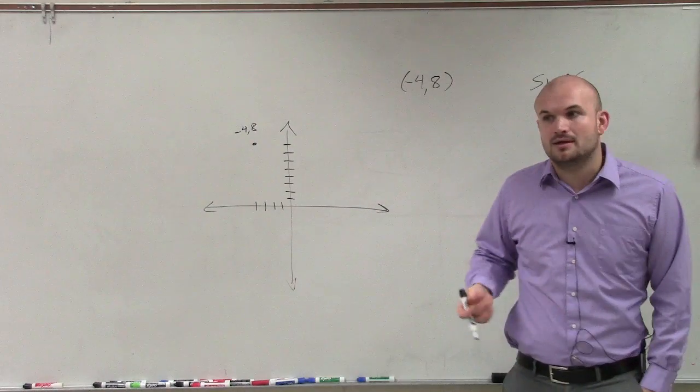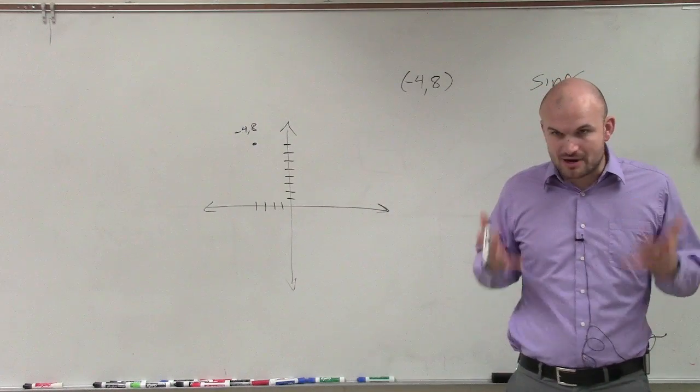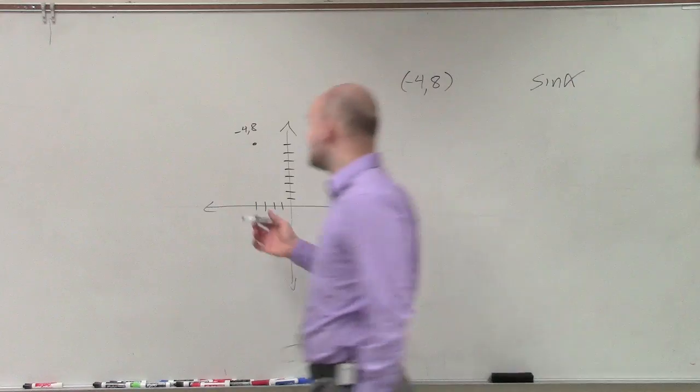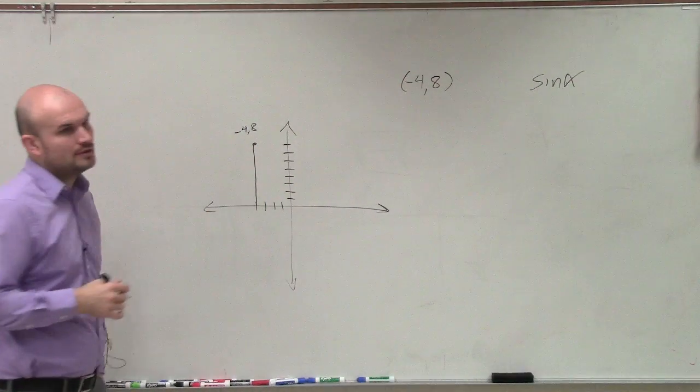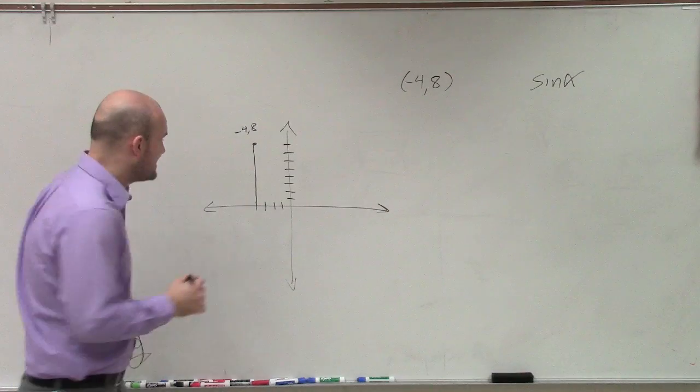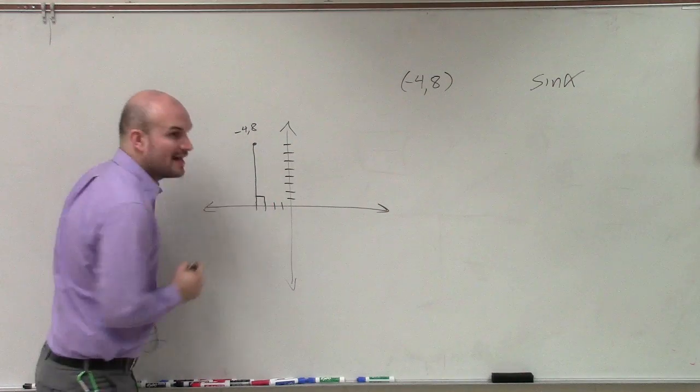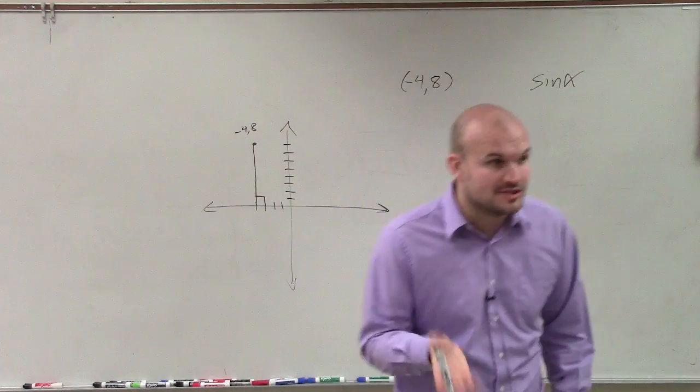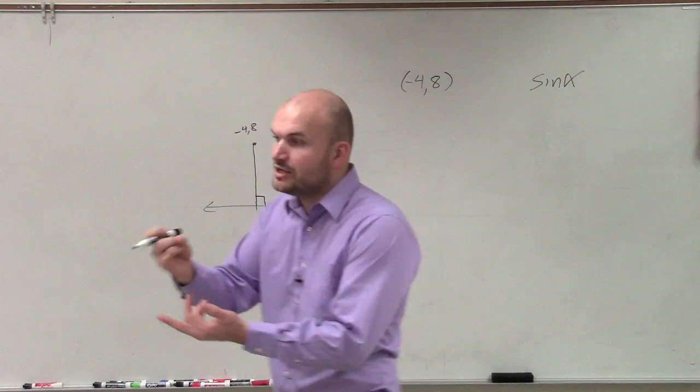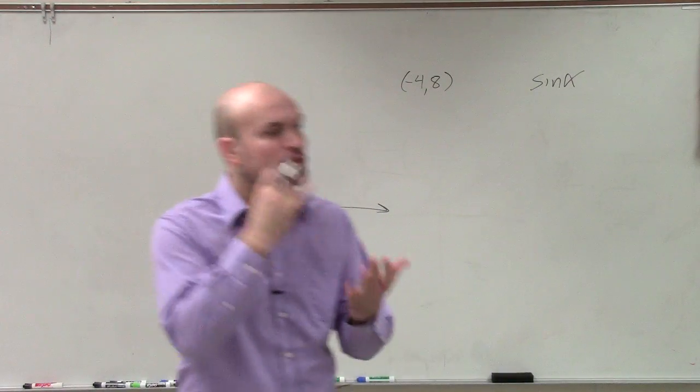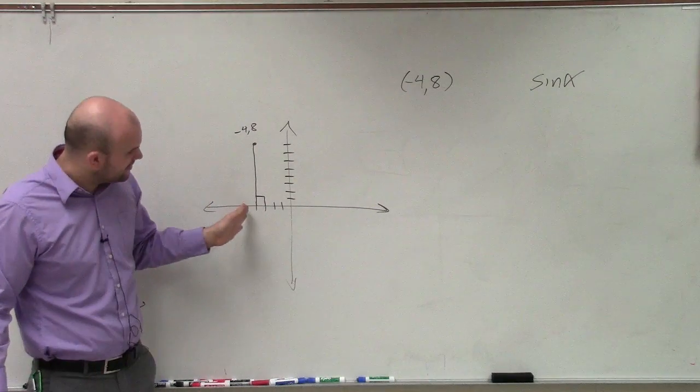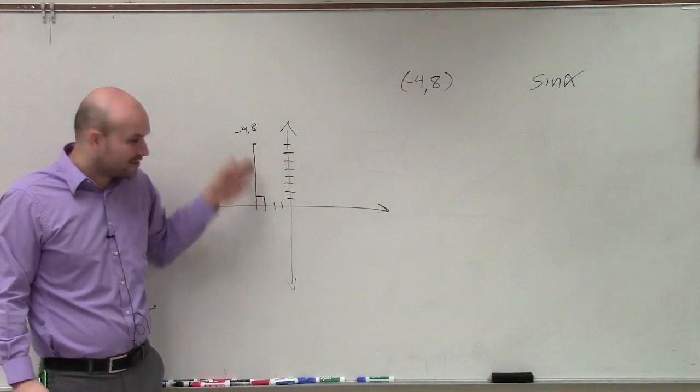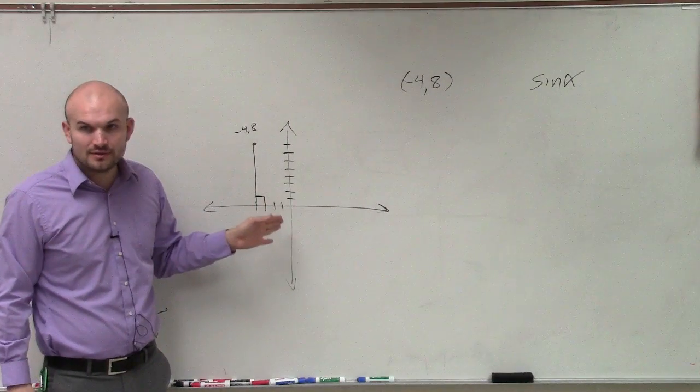But we still need to create a triangle. So remember, how we create our triangle is you create a perpendicular line to the x-axis. That creates your right angle. Because remember, to do our trig that we've done so far, to do Pythagorean theorem, to do sine, cosine, and tangent, you have to have a right triangle. So you're always going to take your point and create a perpendicular line to the x-axis. That creates your right triangle or your right angle.